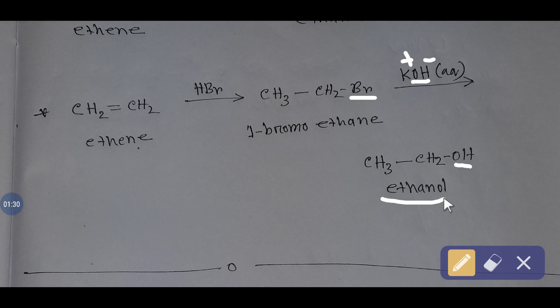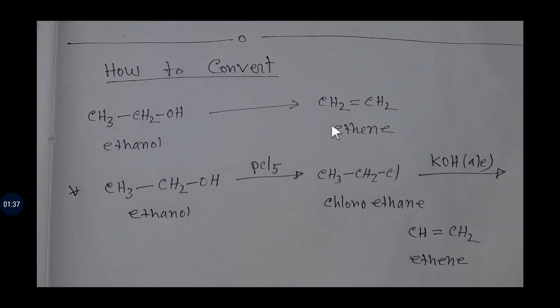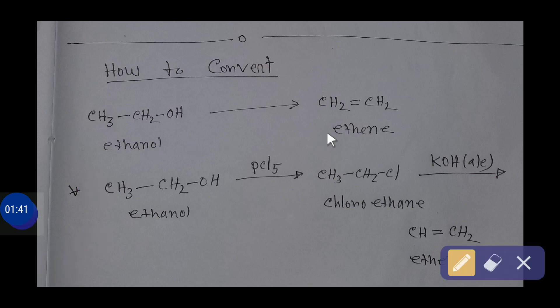Now we'll see how to convert ethanol to ethene. So ethanol, if you add here phosphorus pentachloride, OH will be replaced by chlorine. This is a very common reaction, so you are getting one chloro ethane or chloro ethane.